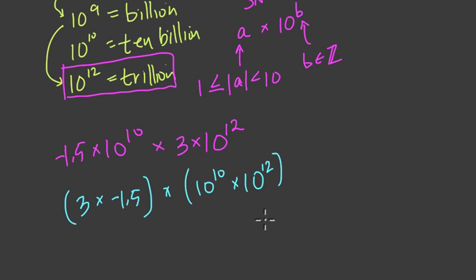Now we're getting somewhere, right? 10 to the 10th times 10 to the 12th, that's 22 10s altogether. So it's 10 to the 22nd power. Huge number.